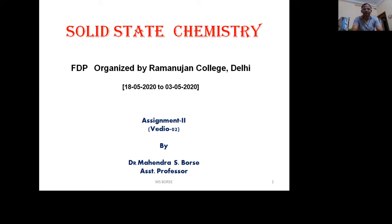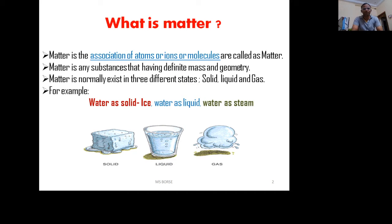Good morning students. Today we will learn solid state chemistry. First, what is matter? Matter is the association of atoms or ions or molecules. Matter is any substance that has definite mass and geometry.